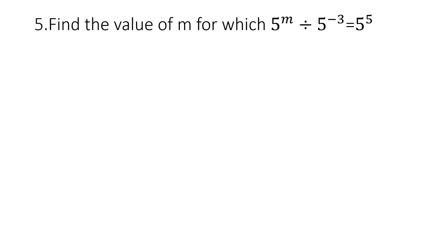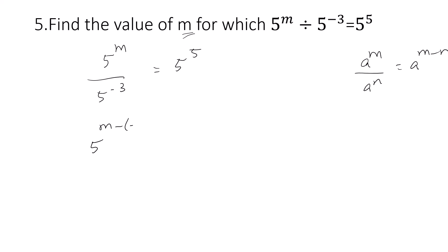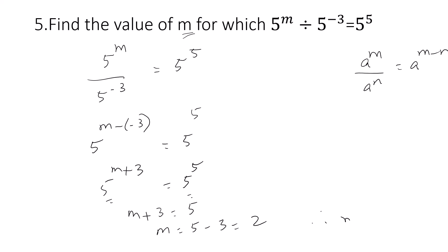Next question: find the value of m given 5 raised to m divided by 5 raised to minus 3 equals 5 raised to 5. Using the law a raised to m by a raised to n equals a raised to m minus n, we get 5 raised to m minus (minus 3) equals 5 raised to 5, so 5 raised to m plus 3 equals 5 raised to 5. Since the bases are the same, we equate the exponents: m plus 3 equals 5, so m equals 2.